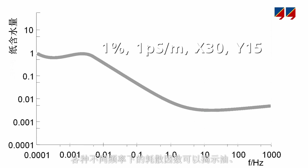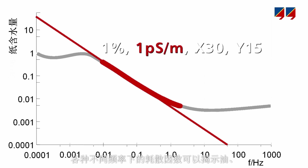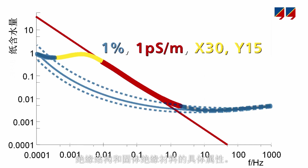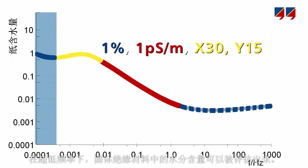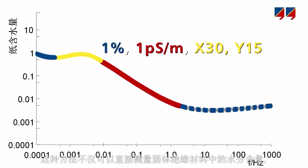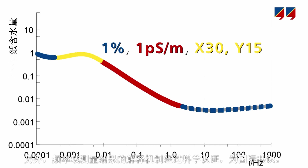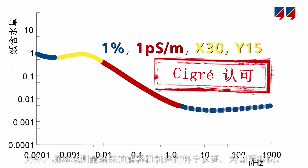Displaying the dissipation factor over a wide frequency range uncovers the specific properties of the oil, the insulation geometry, and the solid insulation. Moisture in the solid insulation becomes especially visible at very low frequencies. This method not only measures the actual moisture content in the solid insulation in a direct way, it is uniquely non-invasive and temperature independent. Plus, the interpretation scheme for frequency domain measurements is scientifically approved and internationally agreed on.